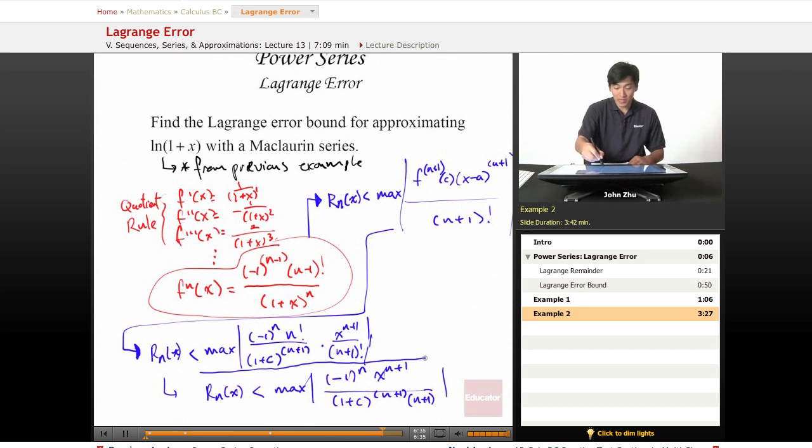Error bound answers are rather long, so you should not expect them to be single values like 3 or 5. They are giant expressions to show us that this Maclaurin series has a very complicated error bound. This is important when we're approximating to know the exact error that we're dealing with.